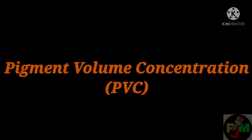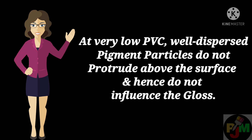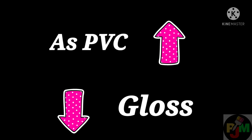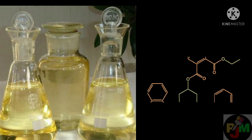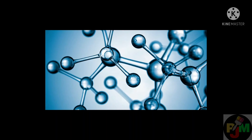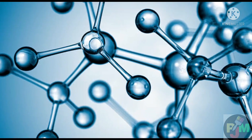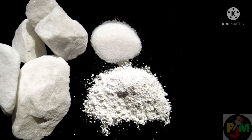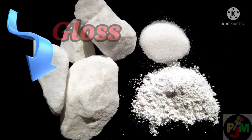Pigment volume concentration: at very low PVC, well dispersed pigment particles do not protrude above the surface and hence do not influence the gloss. With the increase in PVC, gloss of enamel decreases. Gloss retention property decreases as the oil length of the alkyd increases. For a given type of polymer, as molecular weight increases, the gloss decreases. Extenders with a high specific surface area have the highest rate of fall of gloss as PVC increases.